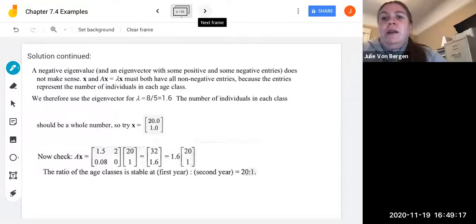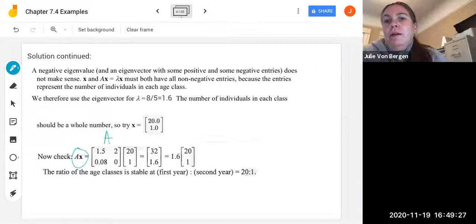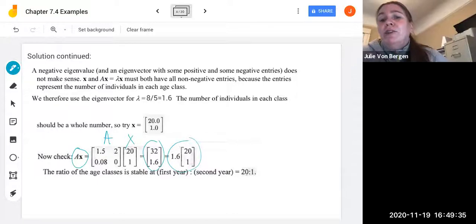So we're going to use this eigenvector 20 and 1 as our x value or initial value. And so we can check. So if we multiply Ax, we get 32 and 1.6. And you can factor out the 1.6 to get the 20 and the 1 here in our vector. So we see the ratio of the age classes is stable at the first year relative to the second year, or it's a 20 to 1 ratio. And that makes some sense because in terms of losing 8%, you could see that there's a stable ratio in there when we factor out the 8 fifths.